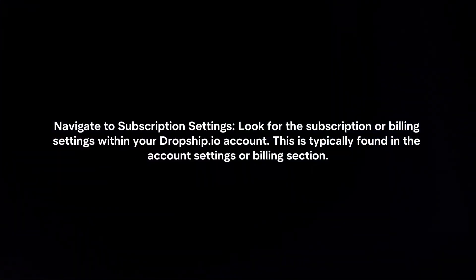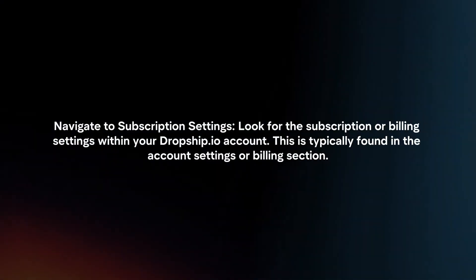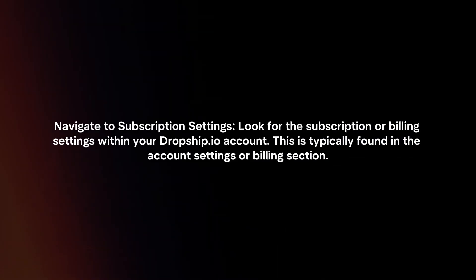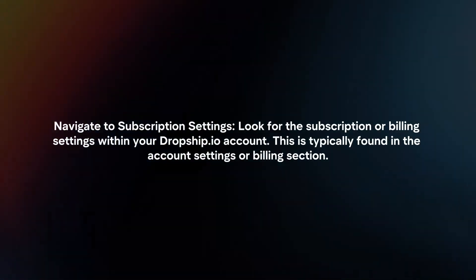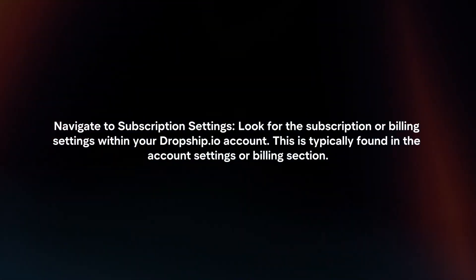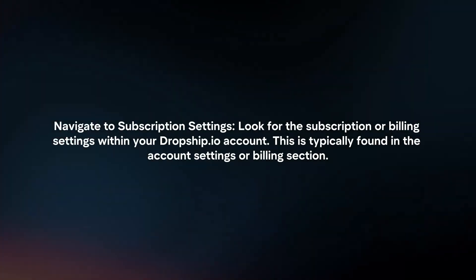Navigate to Subscription Settings. Look for the Subscription or Billing settings within your Dropship.io account. This is typically found in the Account Settings or Billing section.